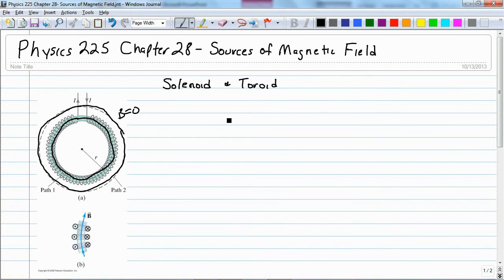So we can use our solenoid equation. Magnetic field strength is equal to mu nought times the number of loops times the current divided by the length.